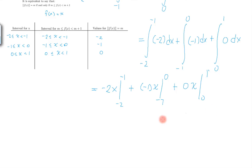This becomes minus 2 times minus 1 minus minus 2 minus 1 times 0 minus minus 1. And this becomes minus 2 minus 1 plus 2 minus 1 plus 1.